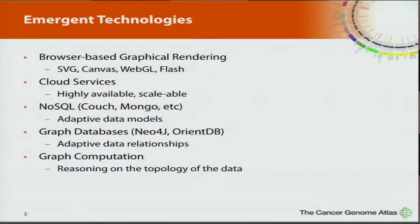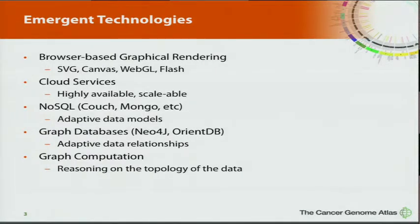The sorts of technologies that allow us to do this — you might call them emergent technologies. For us, the biggest one is browser-based graphical rendering. In the tools I'll be showing, much like the demonstration Ilya gave, we use SVG where the browser is rendering the image directly. There's also Canvas and WebGL, which is a forthcoming standard that allows you to accelerate rendering on the graphical card while still being in the browser experience.